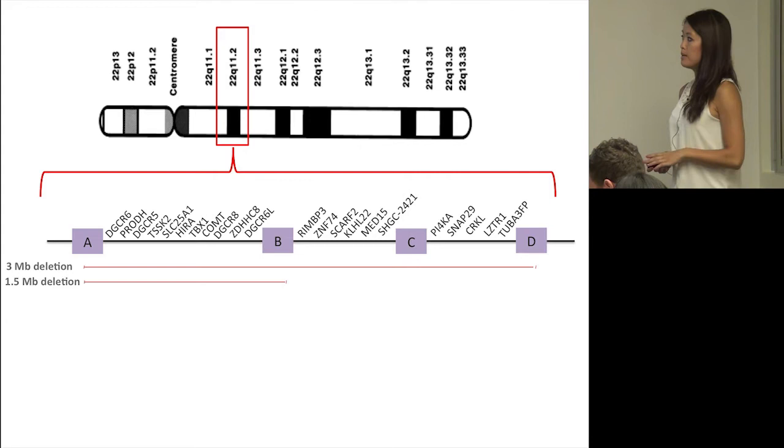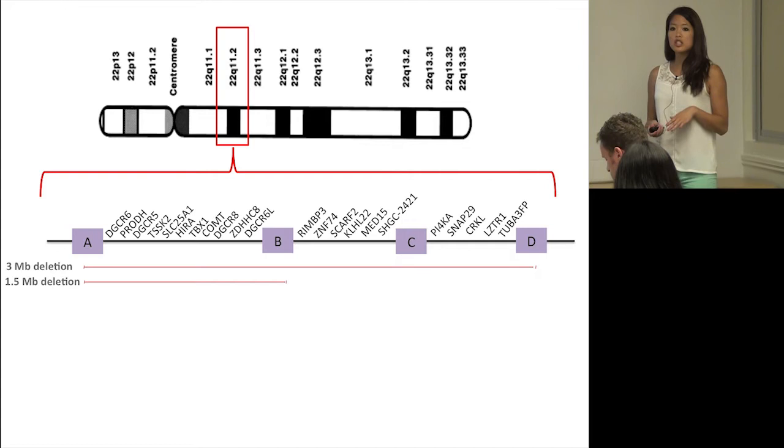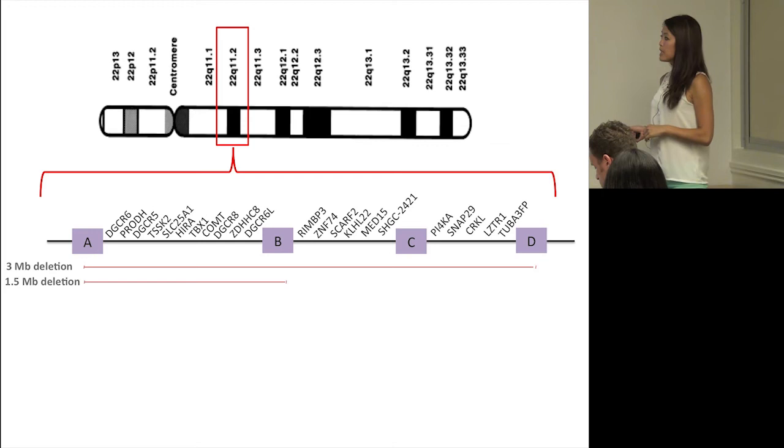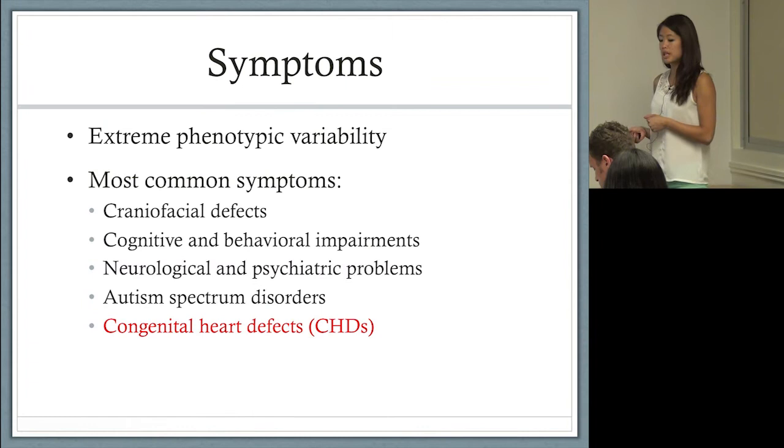Here in purple are low copy repeats, or LCRs. They consist of pseudogenes and genes and also lots of repeats. It's thought that these repeats cause mispairing during crossing over and thus lead to deletion and sometimes duplications.